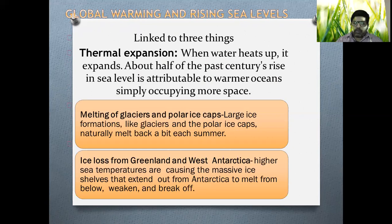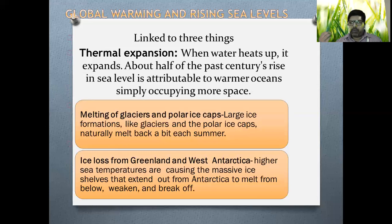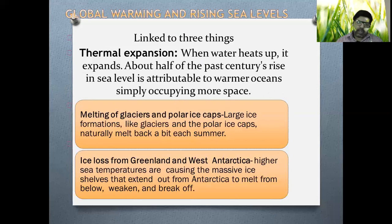There are three major things to understand when talking about rising sea levels throughout the planet. One is thermal expansion — as we have discussed, when water heats up, it expands. About half of the past century's rise in sea level is attributable to warmer oceans simply occupying more space. In terms of occupying more space, vegetation and aquatic life have been gradually changed, and many marine subsystems in aquatic life have been drastically altered. The density of the water has changed gradually and this affects mankind significantly.